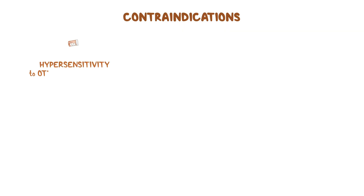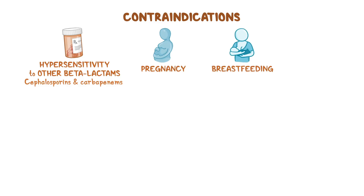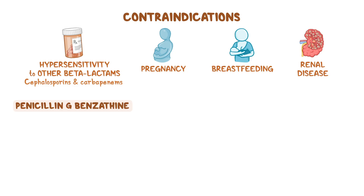As far as contraindications go, there aren't many — mainly hypersensitivity to penicillins. They should be used cautiously in clients with hypersensitivity to other beta-lactams like cephalosporins and carbapenems, due to cross-reactivity. Penicillins should also be used with caution during pregnancy, breastfeeding, and in clients with renal disease. Additionally, penicillin G-benzathine has a boxed warning against intravenous use.